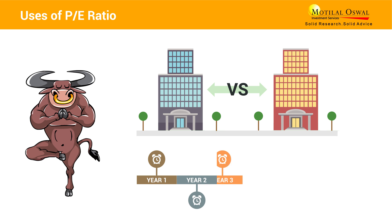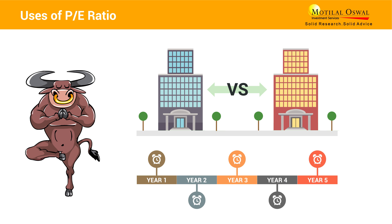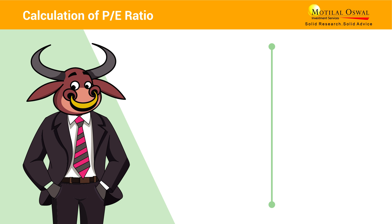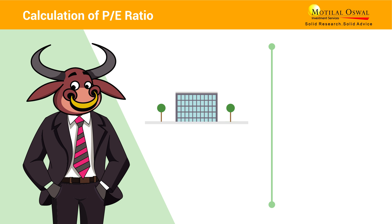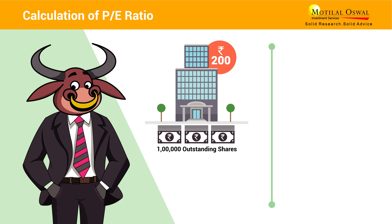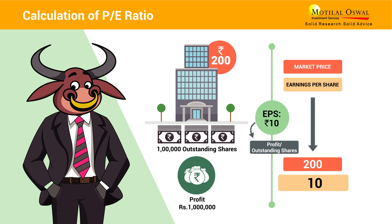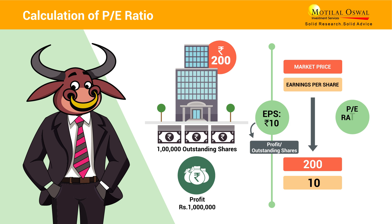The PE ratio works best when used to compare companies in the same sector or the stock of one company over different periods of time. For example, a company you want to invest in is currently trading at 200 rupees and has 1 lakh outstanding shares. It declares its earnings over the past 12 months at 10 lakhs rupees. Its earnings per share, or EPS, is 10 rupees, and its PE ratio is 200 divided by 10, which comes to 20.